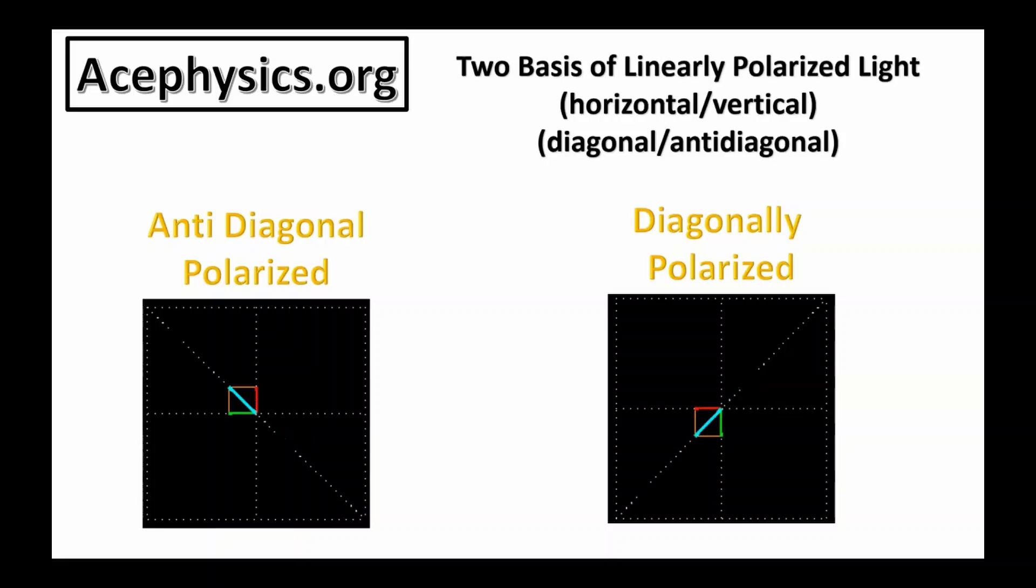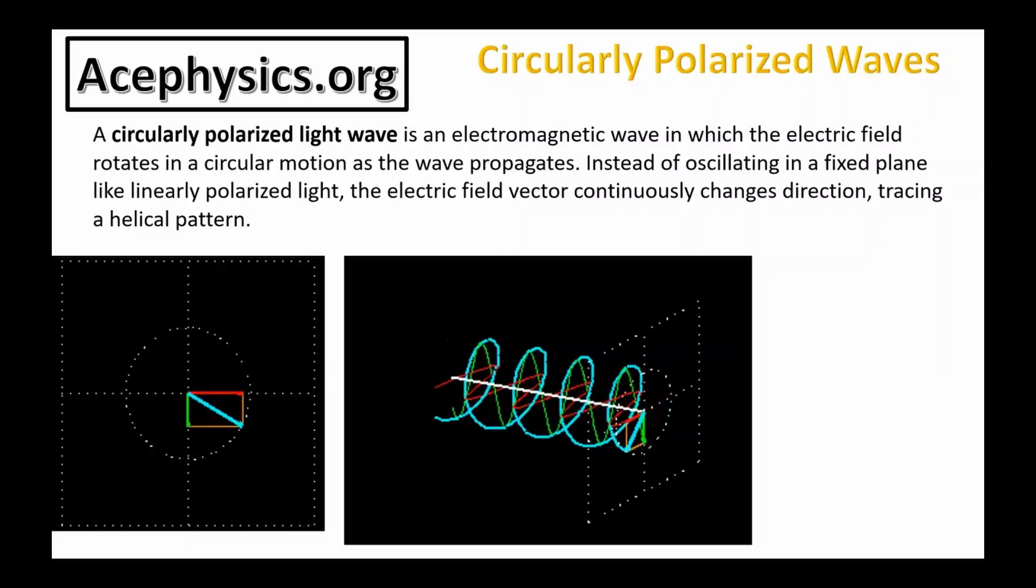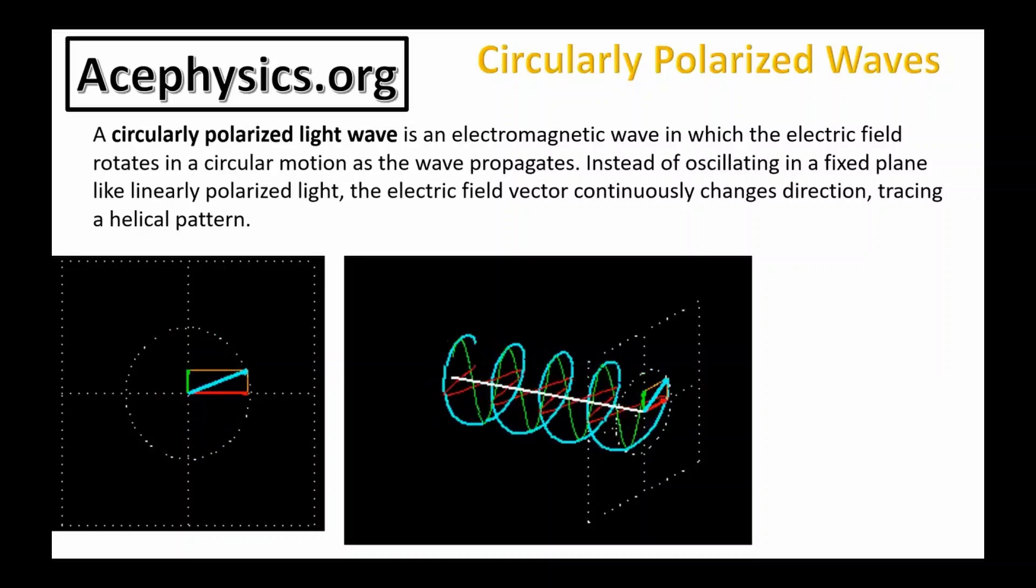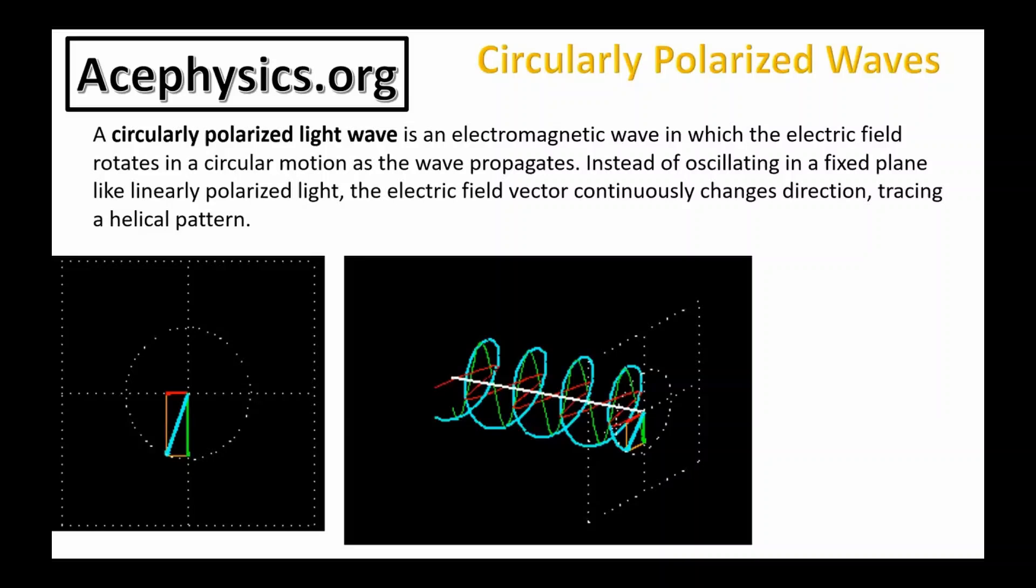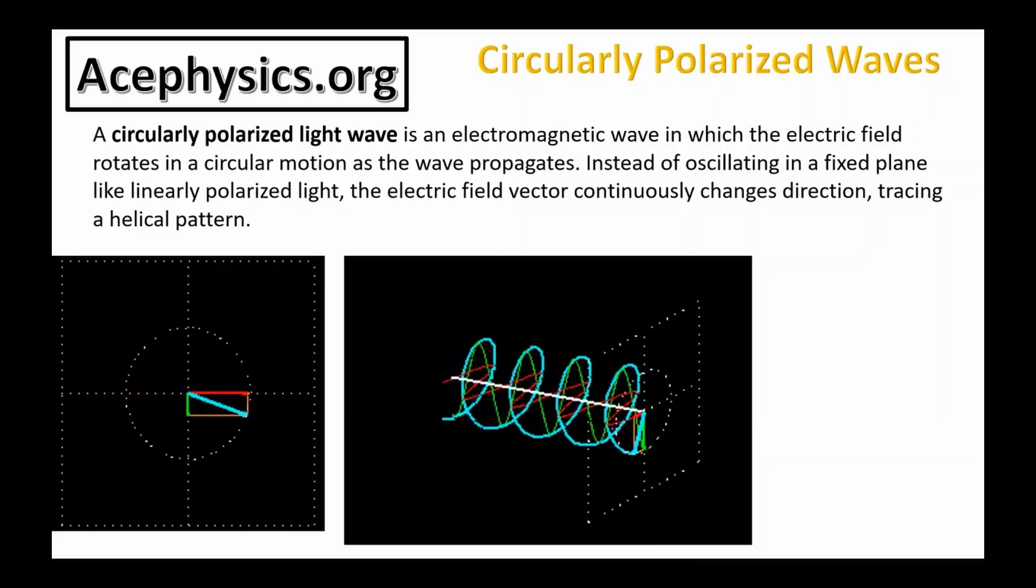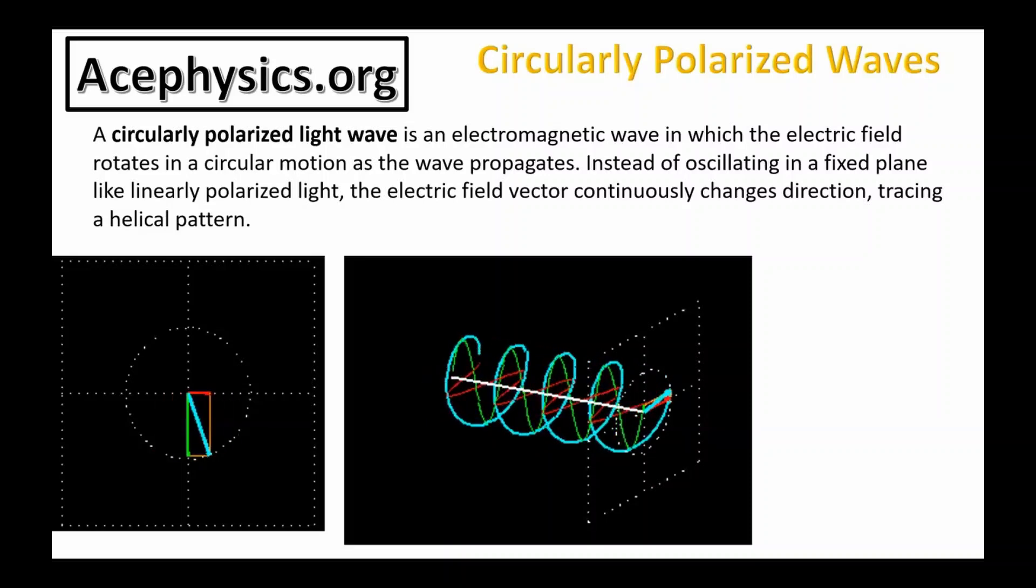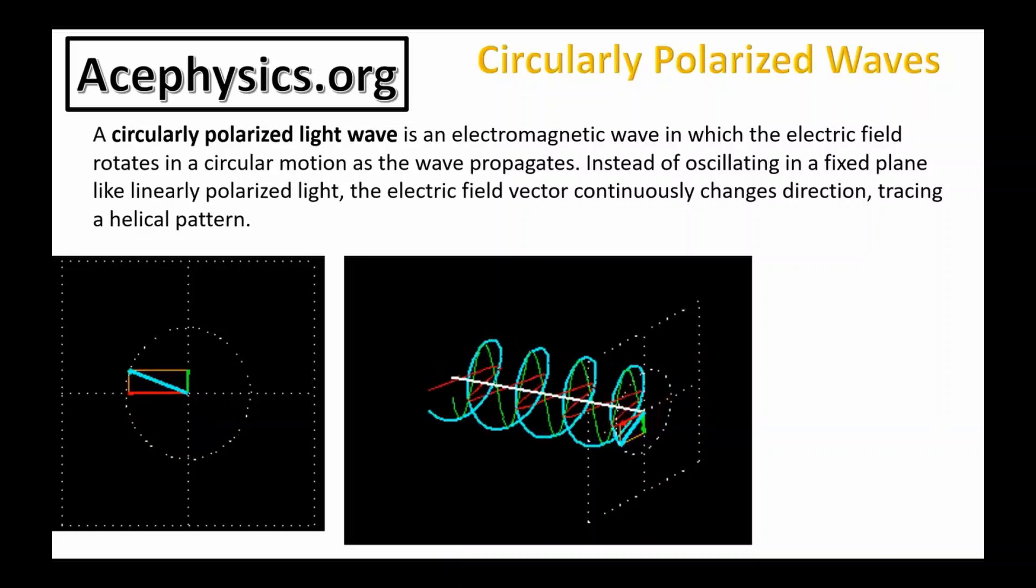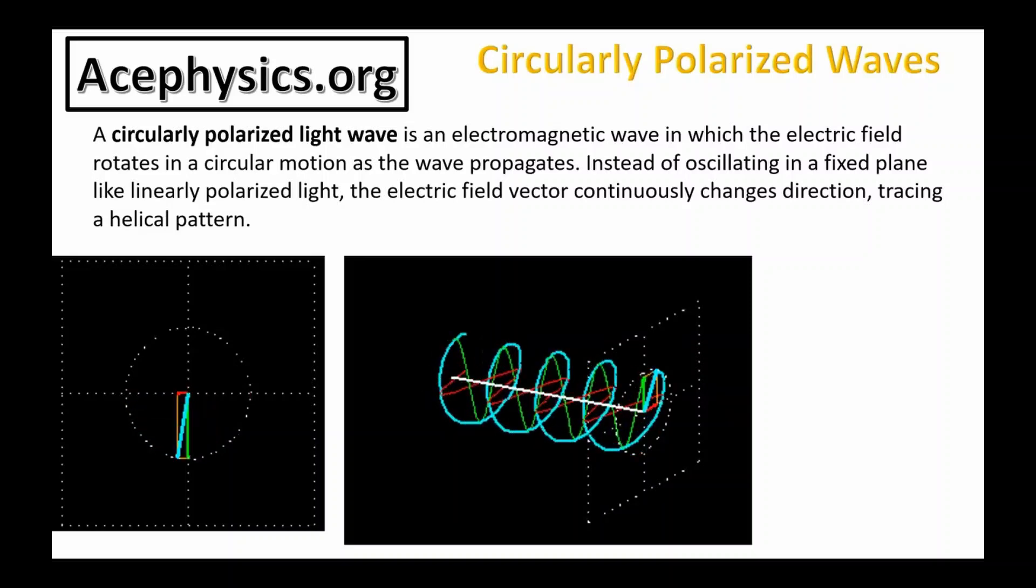Another complete basis of light polarization is the diagonal and anti-diagonal polarization. Finally, we have circularly polarized waves. A circularly polarized light wave is an electromagnetic wave in which the electric field rotates in a circular motion as the wave propagates. Instead of oscillating in a fixed plane like linearly polarized light, the electric field vector continuously changes direction, tracing a helical path.